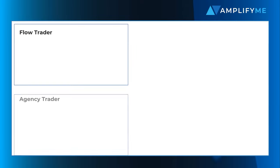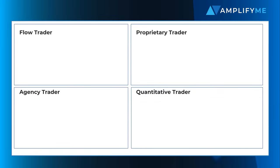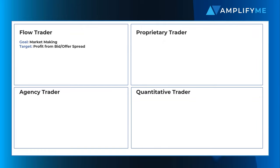In addition to asset classes, there are different types of traders: flow, agency, quantitative and proprietary. A flow trader is the most common type of trader in an investment bank. The role of a flow trader is to provide a market with liquidity and depth, whilst also making a market for a particular security, providing a client with a bid and offer alongside an order volume.